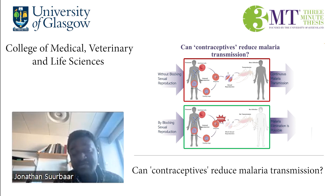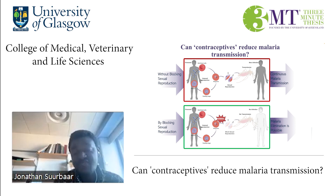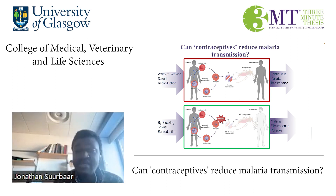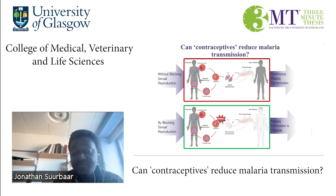Then the question comes: can we block this sexual development phase so that we can be able to stop the transmission of malaria? Because these are the sexual forms that are picked up by a mosquito and transmitted to another individual. This is where my PhD comes in. When we were looking at a particular parasite that was resistant to a new malaria drug, we found that this particular parasite is unable to make male and female parasites.